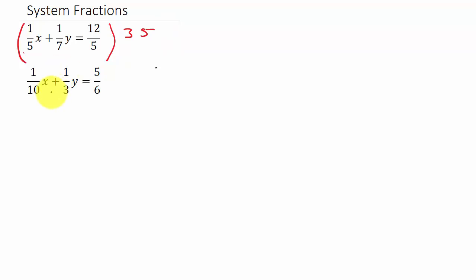And then for this one, we want to multiply both sides by the common denominator. So you can see here, the common denominator is what? 30. Alright.